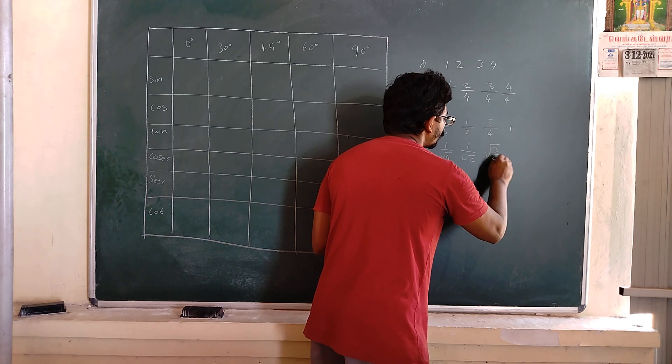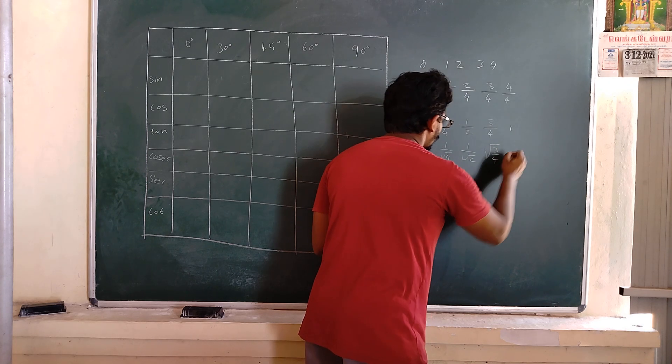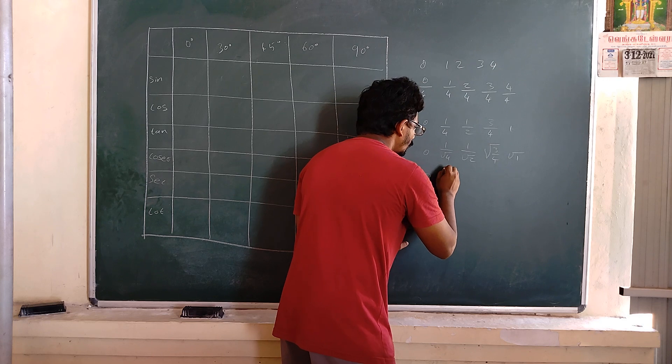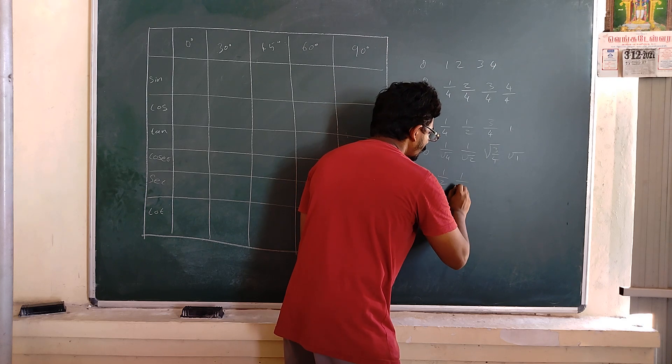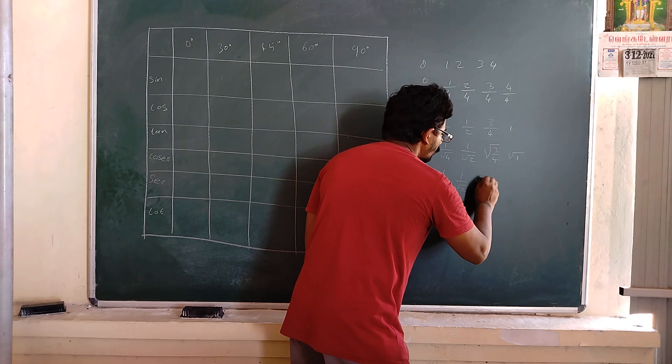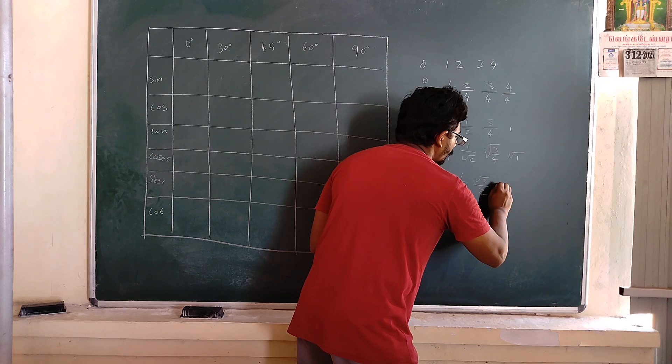Simplify it: 0, 1/2, 1 by square root of 2, square root of 3 by 2, and 1.